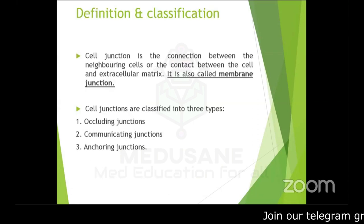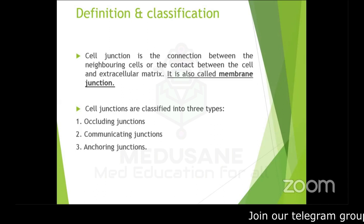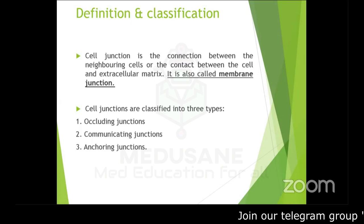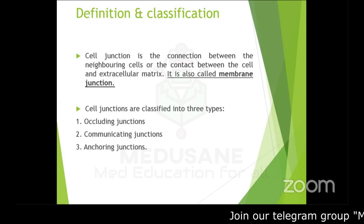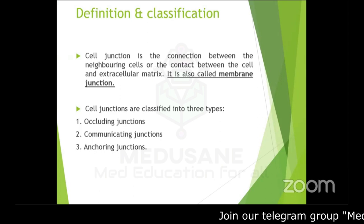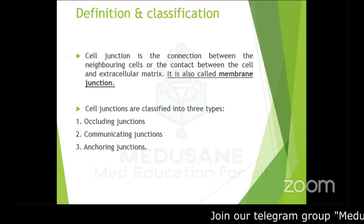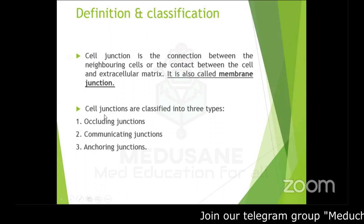Coming to the definition of cell junction — a cell junction is a connection between one cell and its neighboring cell, or a contact between the cell and the extracellular matrix. Both apply to cell junction. Another name for cell junction is membrane junction — this is an important MCQ point.